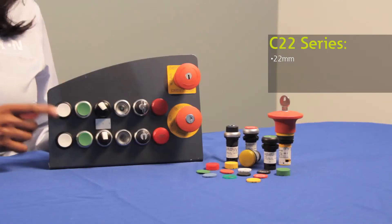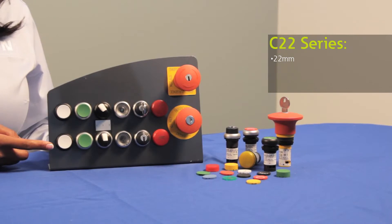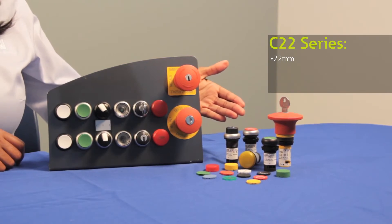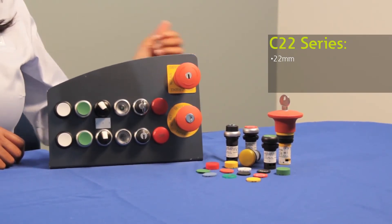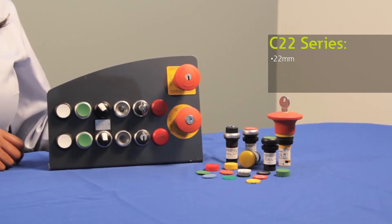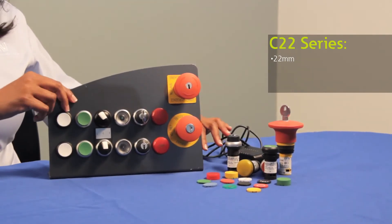Eaton also offers another 22 millimeter push button which is our C22 series. The C22 line closely models after the M22 and from the front of the panel you will not see any differences between the two lines. And that's because the C22 has the same look and feel as the M22 and is also available in hundreds of styles with black and silver bezel options. This allows you to mix and match devices as needed.